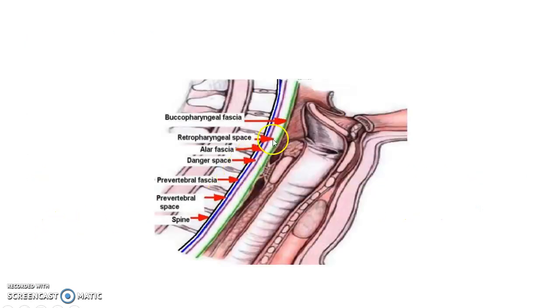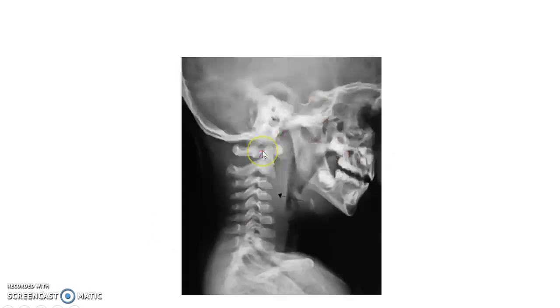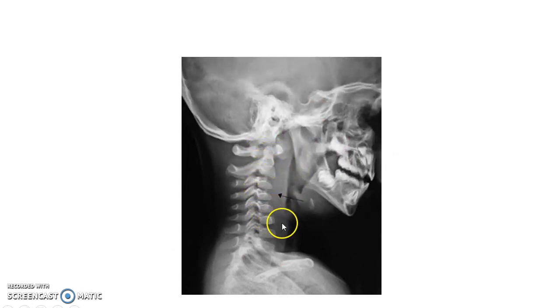This picture shows the retrofaryngeal space, bounded anteriorly by the bucopharyngeal fascia and posteriorly by the alar fascia. This picture shows the x-ray of a person with retrofaryngeal abscess.